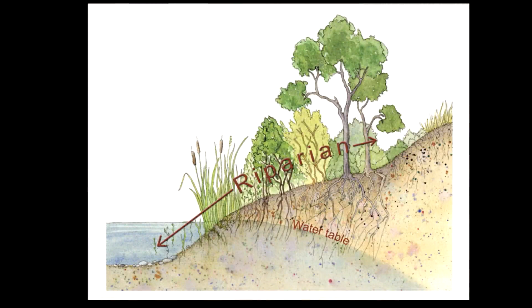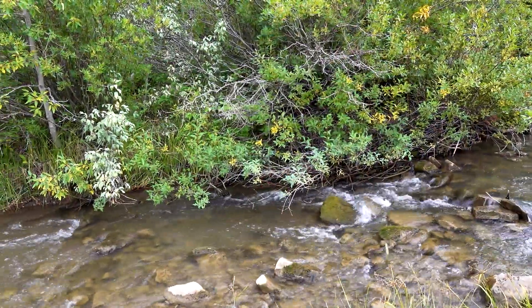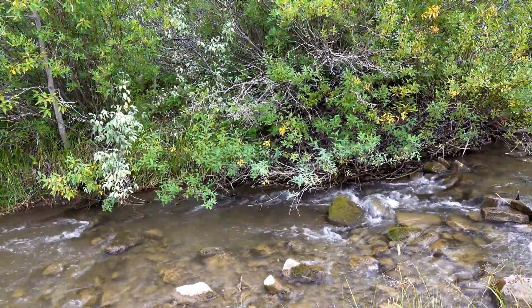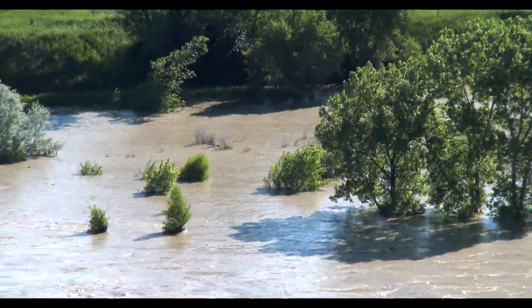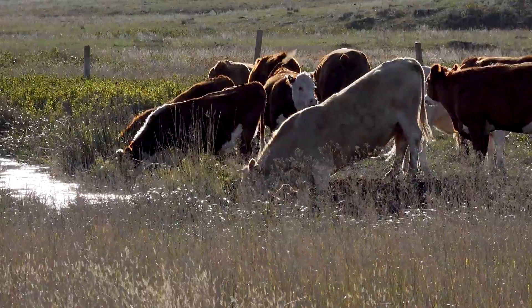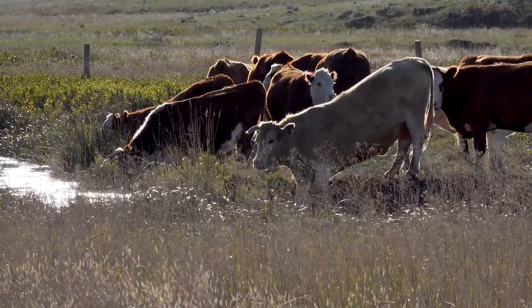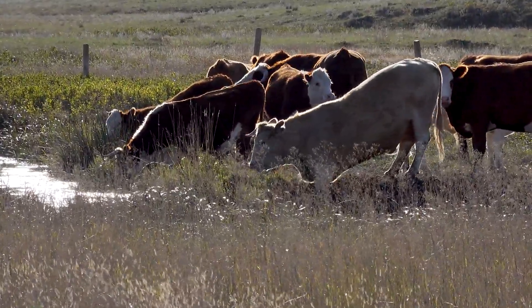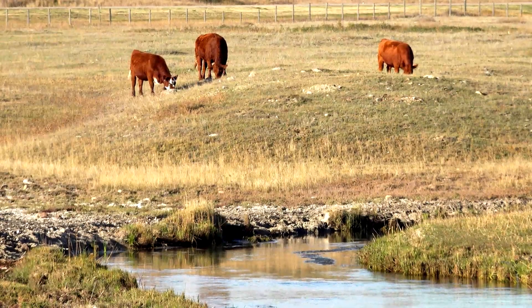Riparian areas are the transitional zone between open water of a water body and the drier uplands. These lush green belts are built and maintained by water, either from a high water table or flooding. If we or our land use change the plants, soil, or water regime, we can impact the health of these sensitive but vital areas.